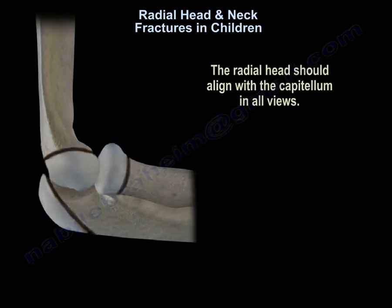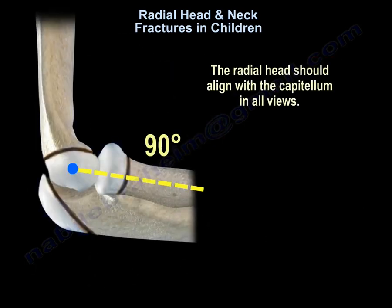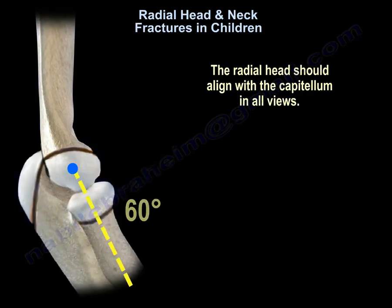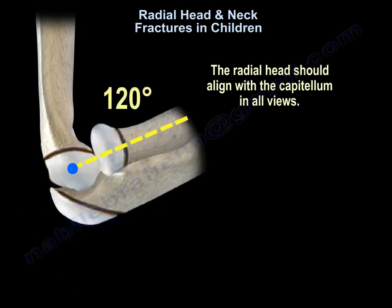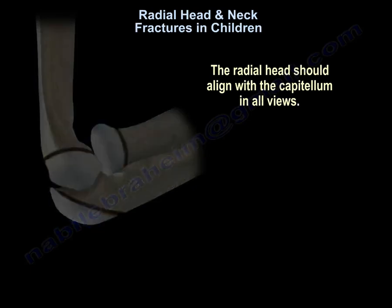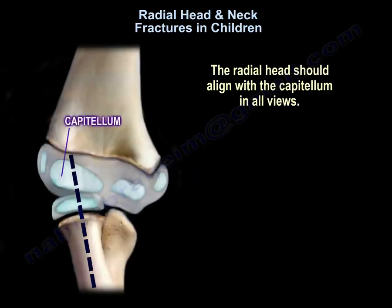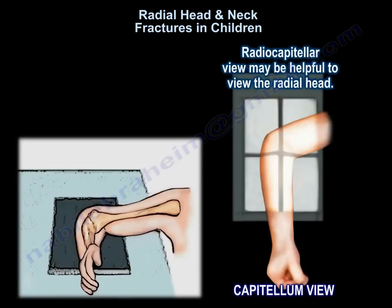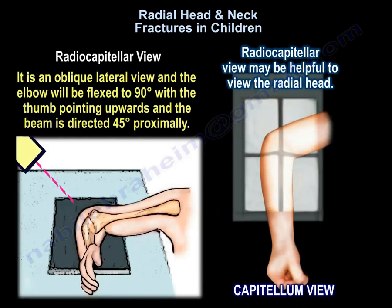The radial head should align with the capitellum in all views. The radial head capitellular view may be helpful to visualize the radial head. It is an oblique lateral view where the elbow is flexed to 90 degrees, the thumb is pointing upwards, and the beam is directed approximately 45 degrees.